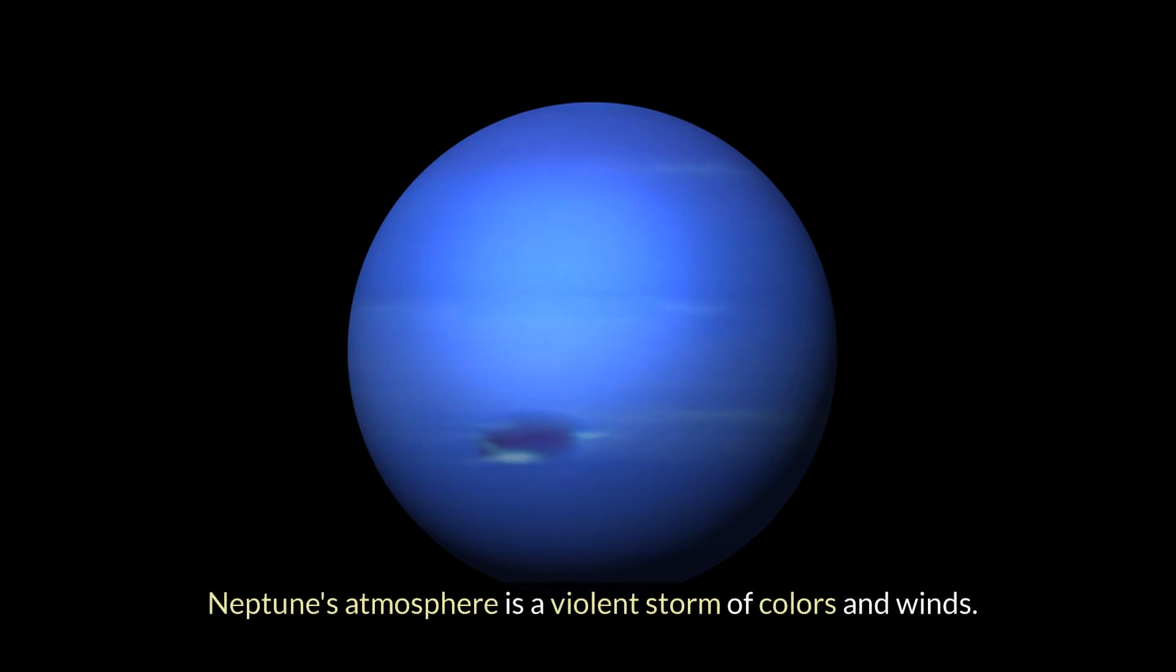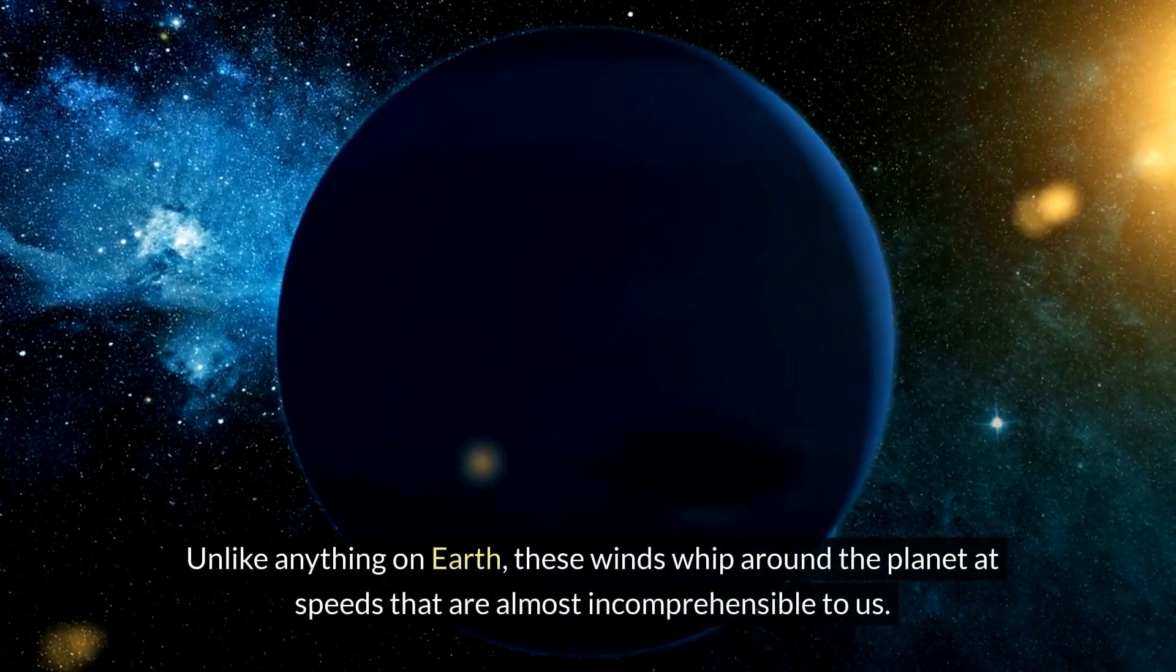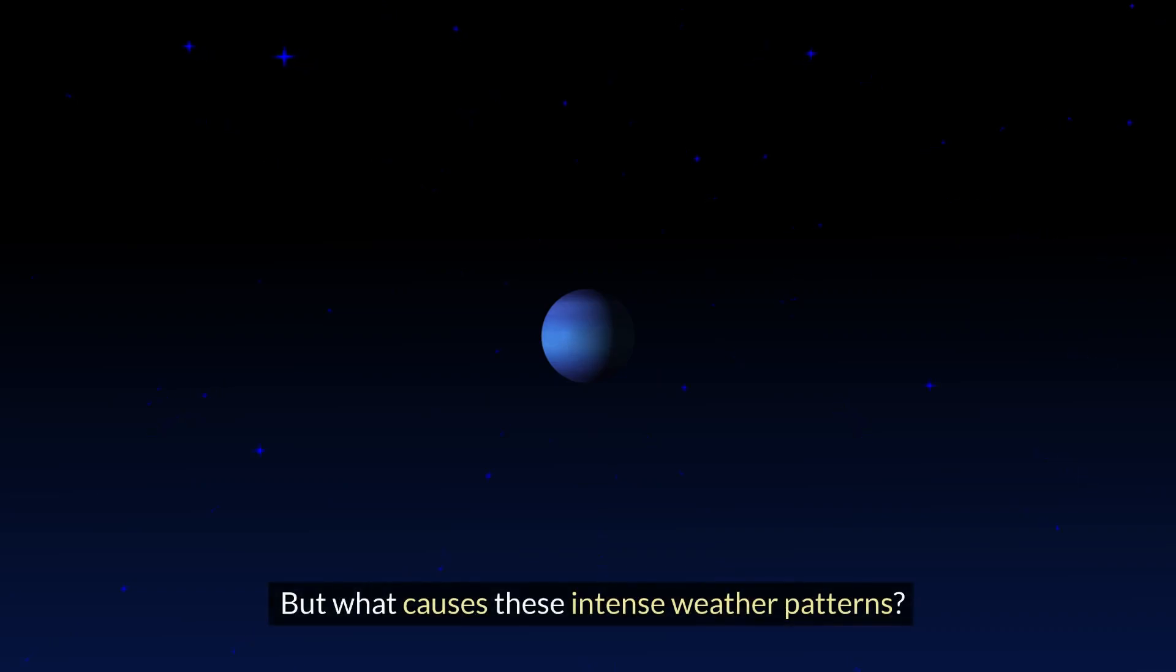Neptune's atmosphere is a violent storm of colors and winds. Unlike anything on Earth, these winds whip around the planet at speeds that are almost incomprehensible to us. But what causes these intense weather patterns?